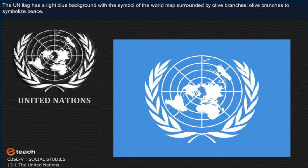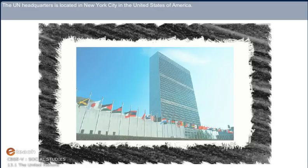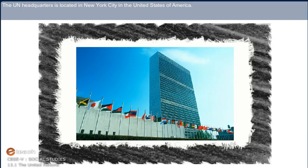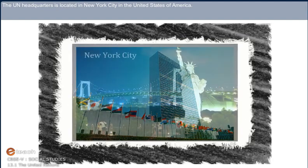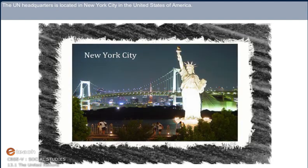The UN flag has a light blue background with the symbol of the world map surrounded by olive branches — olive branches to symbolize peace. The UN headquarters is located in New York City in the United States of America.